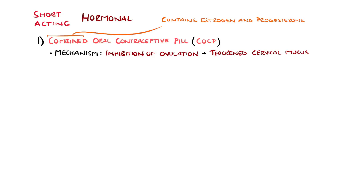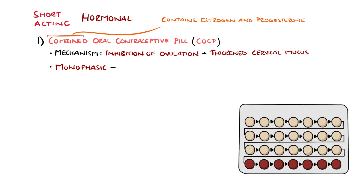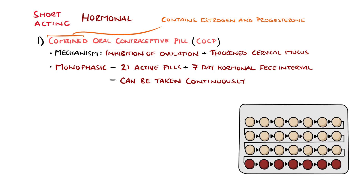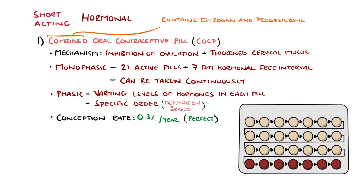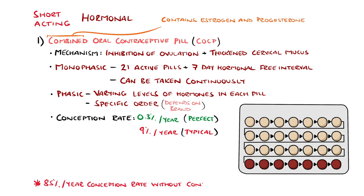Options include monophasic pills, meaning they have the same amount of hormones in each pill. These typically come in 21 active pill packets that may be taken with a 1-week hormone-free interval featuring 7 inactive pills. This can be done to induce bleeding, or alternatively they can be taken continuously. Phasic pills have varying amounts of hormone in the pills which need to be taken in the correct order. The percentage of individuals with an unintended pregnancy per year is 0.3% with perfect use, but the typical rate is around 9%. For context, no contraception leads to approximately an 85% unintended pregnancy rate in one year.